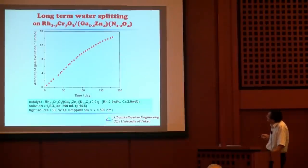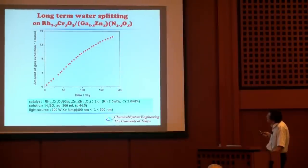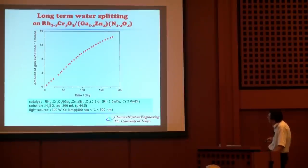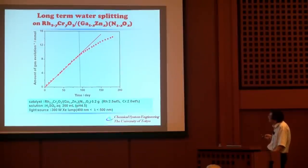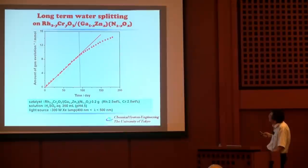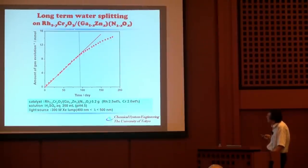This is a long-term water-splitting experiment under sunlight-like intensity. I plot the accumulated amount of evolved hydrogen as a function of reaction time per day. Up to about 90 days, the photocatalyst evolves hydrogen steadily. After that, the activity gradually degrades — not due to material degradation itself, but because the contact between the hydrogen evolution catalyst and the semiconducting photocatalyst worsened. We are working to improve this durability.